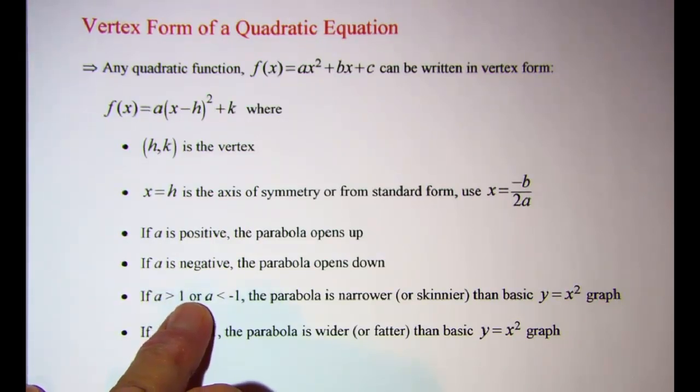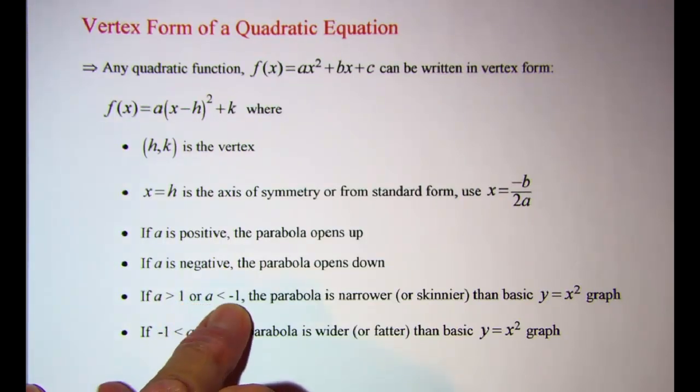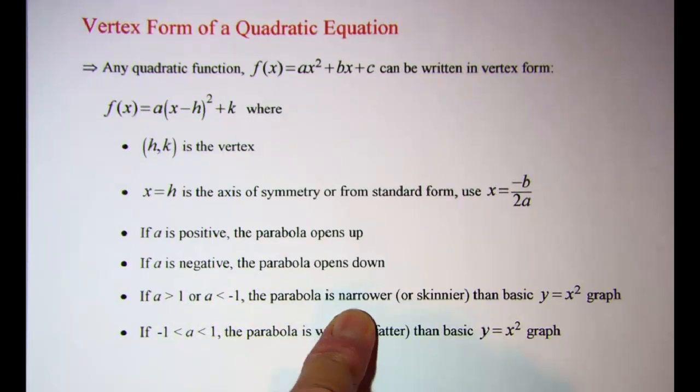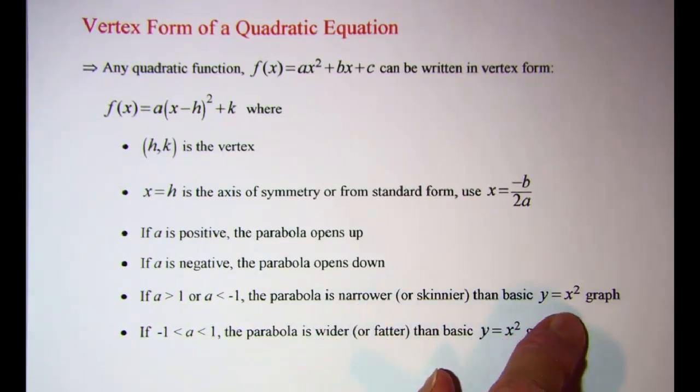If a is bigger than one or less than negative one, then the parabola will be skinnier than the basic graph of the parabola y equals x squared.